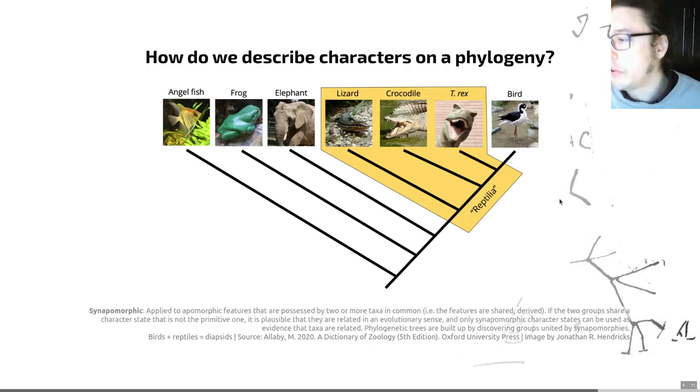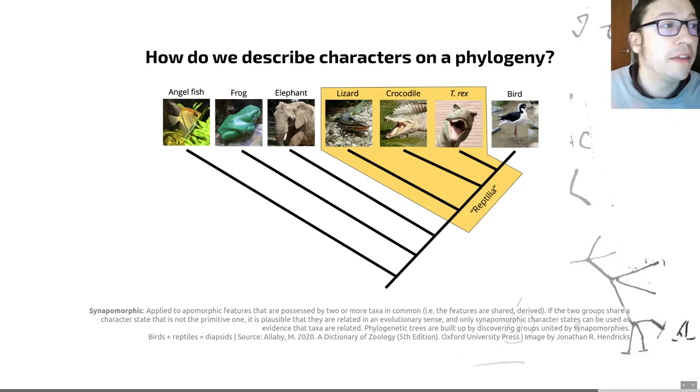Possibly the most important term we want to define though is a synapomorphy. This is a word that is essentially a shared derived feature. It's the bread and butter of understanding phylogeny. So the definition here is it's applied to apomorphic features that are possessed by two or more taxa in common, i.e. the features are shared derived. Then that's really important because this can tell us about something about evolutionary relationships. For example, I told you this clade is called the diapsids. The diapsids are based on the fact that they have two ancestral skull openings. This is a group that's defined by having two openings on their skull called temporal fenestrae if you're interested, just behind the eye above and below it. That's lost in some groups, which is why I'm saying it's an ancestral state in some of these taxa because some of them have lost it again.